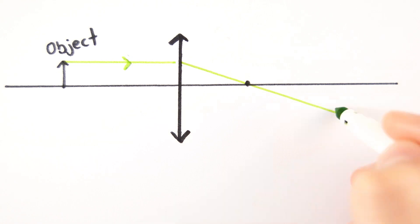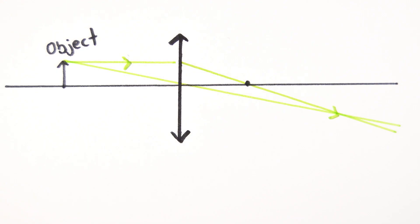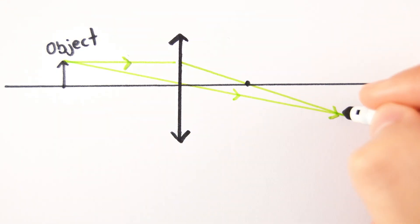You then draw two rays from the tip of the object, one passing parallel to the principal axis and then through the principal focus. The other is a straight line through the centre of the lens. The point where the rays meet is the tip of the object's image.